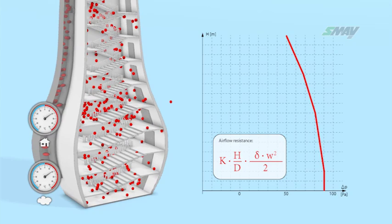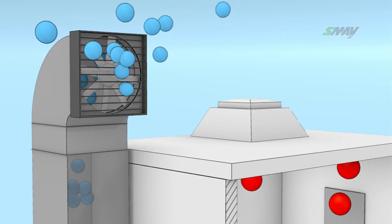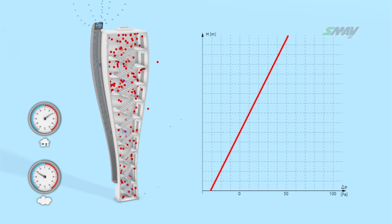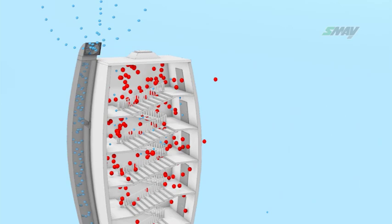However, if in this case air is supplied to the stairwell at a temperature significantly below that of the inside, then pressure stratification will occur as a result of the stack effect. The supply of large amounts of air causes a rapid increase in pressure. However, the increase will not be uniform across the entire height of the stairwell. The stack effect will disturb its distribution.